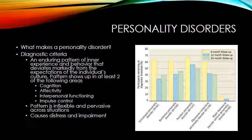So it's a long-standing pattern. It has to cause distress and impairment. Typically with personality disorders, it's distress and impairment not only for the individual, but also for those in the individual's social circle — family members and friends as well.